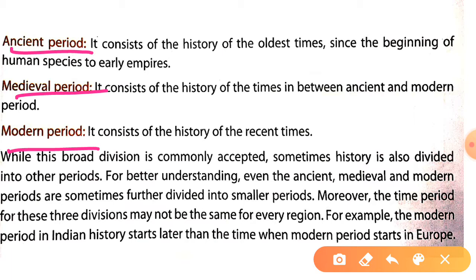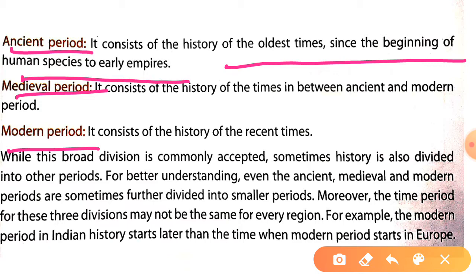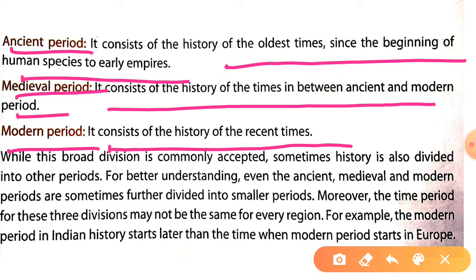The ancient period consists of the history from the oldest times — since the beginning of human civilization to the early empires. The medieval period consists of the history of times between the ancient and modern periods. The modern period consists of the history of recent times. So the ancient period covers from when humans evolved up to early Indian kingdoms. The medieval period covers foreign invaders coming into India up to 1757, and some books include up to the revolt of 1857. The modern period starts after 1857, from 1858 onwards.